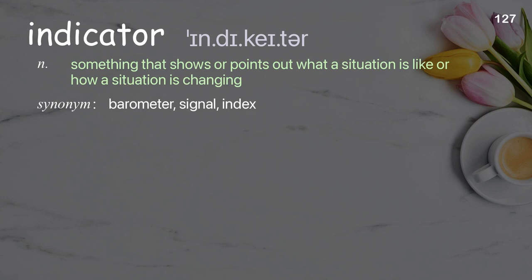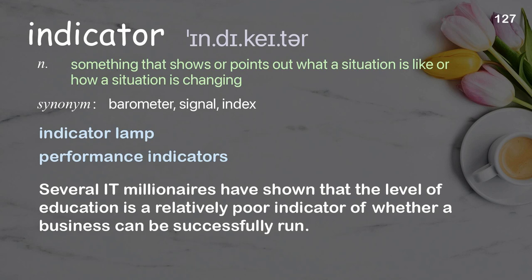Indicator: something that shows or points out what a situation is like or how a situation is changing. Examples: indicator lamp; performance indicators. Several IT millionaires have shown that the level of education is a relatively poor indicator of whether a business can be successfully run.